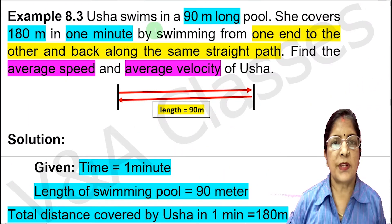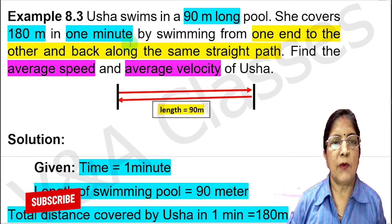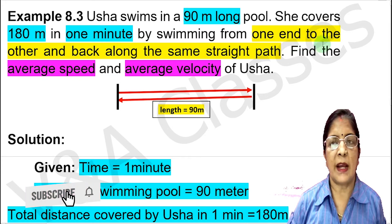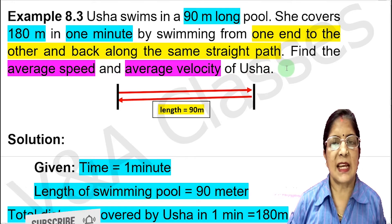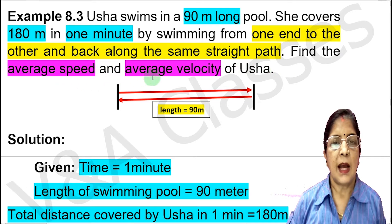The question is: Ursa swims in a 90-meter long pool. She covers 180 meters in one minute by swimming from one end to the other and back along the same straight path. Find the average speed and average velocity of Ursa.